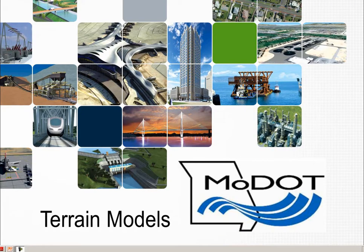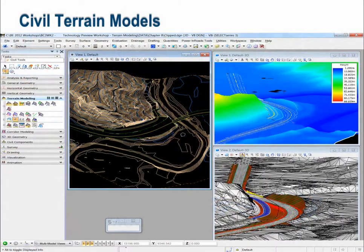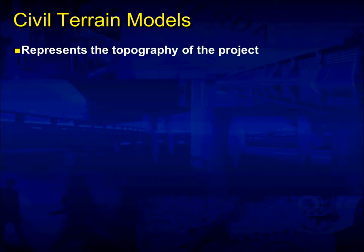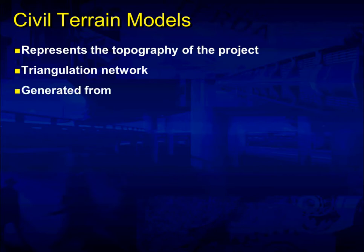In chapter one we're going to talk about terrain models. In this chapter we have a PowerPoint that goes over what a terrain model is. Here's a picture of several different terrain models that you can produce from the PowerGeoPAC program. Civil terrain models basically represent the topography of a project. It's a triangulation network, generated from traditional survey data where you send the survey crew out and they pick up the data for you.